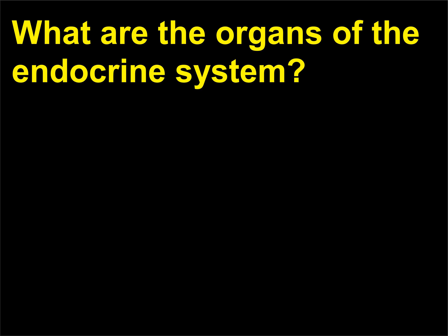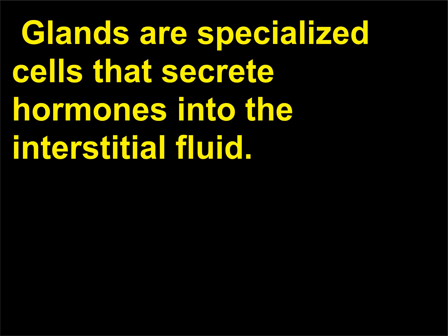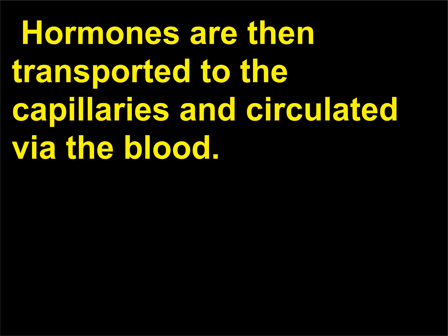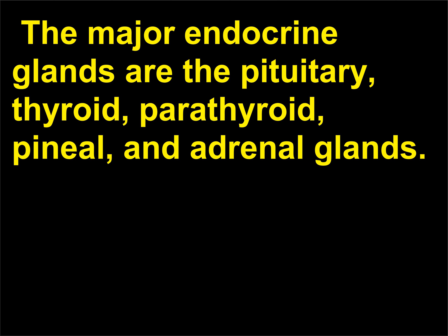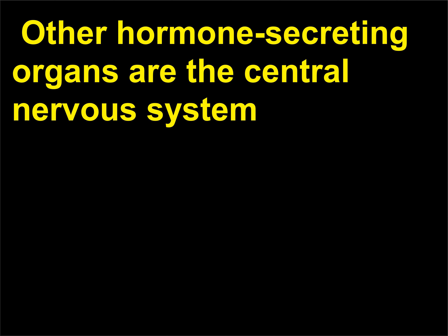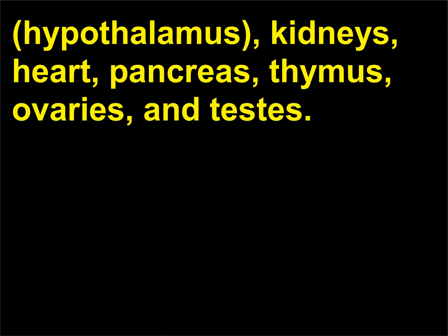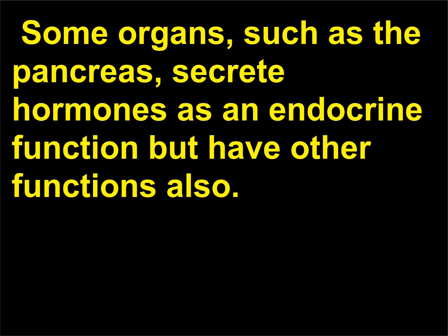What are the organs of the endocrine system? The endocrine system consists of glands and other hormone-producing tissues. Glands are specialized cells that secrete hormones into the interstitial fluid. Hormones are then transported to the capillaries and circulated via the blood. The major endocrine glands are the pituitary, thyroid, parathyroid, pineal, and adrenal glands. Other hormone-secreting organs are the central nervous system, hypothalamus, kidneys, heart, pancreas, thymus, ovaries, and testes. Some organs, such as the pancreas, secrete hormones as an endocrine function but have other functions also.